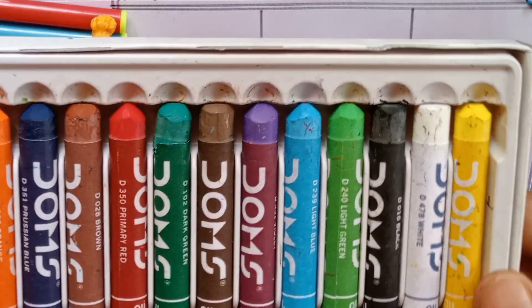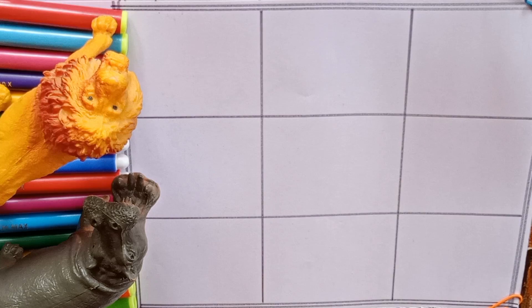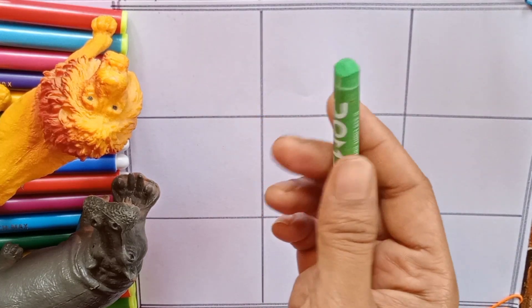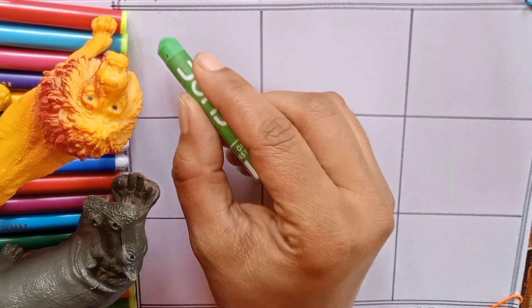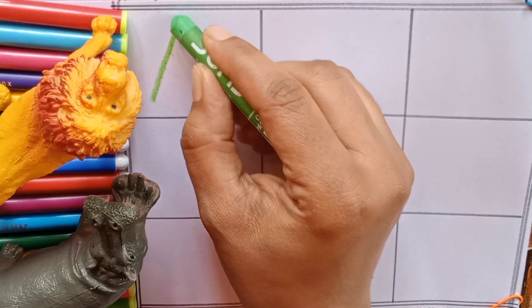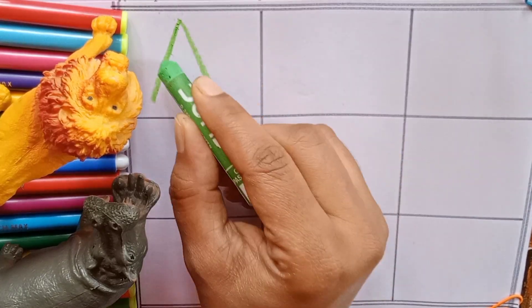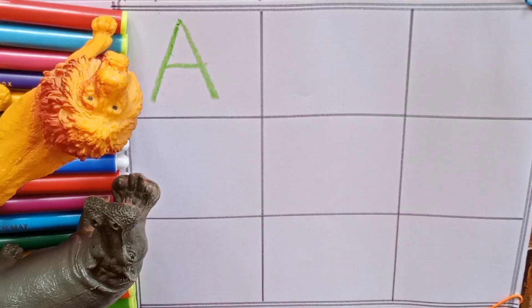Now we will write alphabets. Our first color is light green. A. A for apricot. Apricot is a fruit. A for also angel.